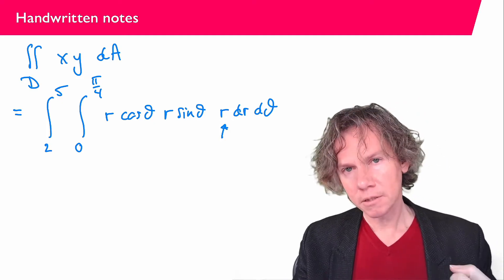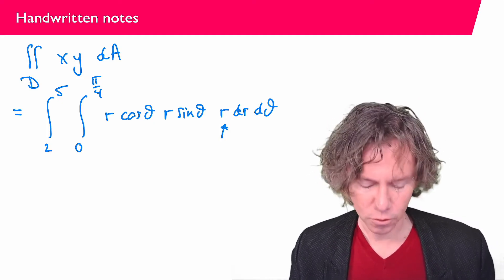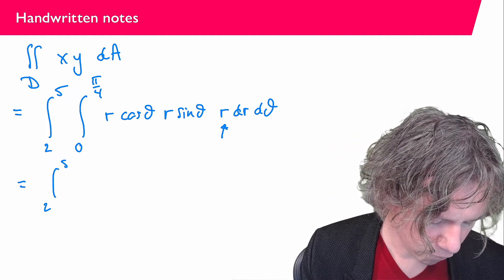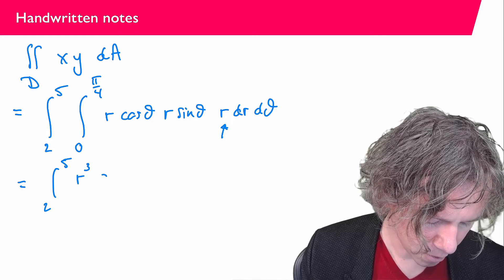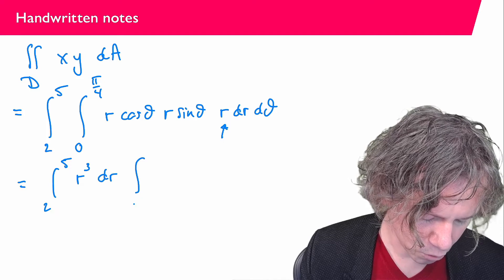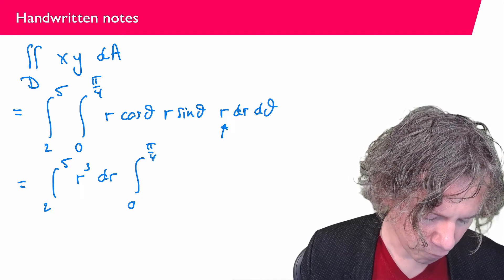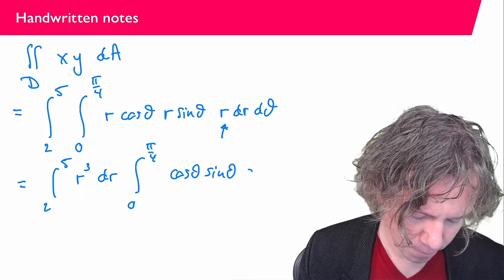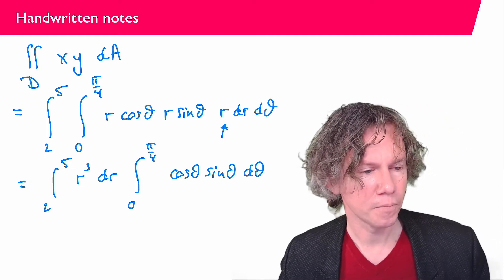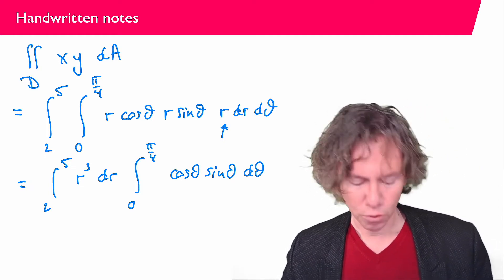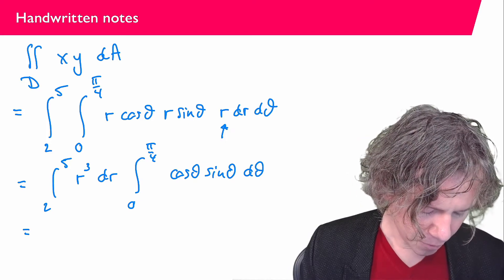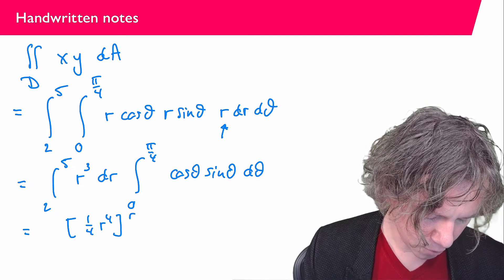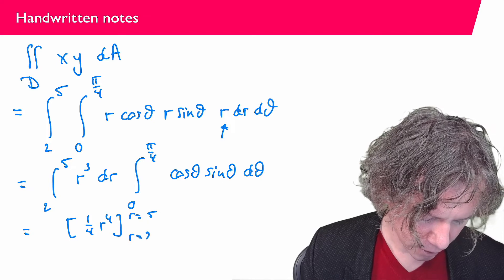So if I now split it into the integral related to r and to theta, you see that I can write this as the integral from 2 to 5, r to the power of 3 dr. And the second integral runs from 0 to pi over 4. And we have cosine theta, sine theta, dθ. Now of course the first integral is easy to find. So I can immediately give an antiderivative here. 1 over 4, r to the power of 4, and r is in between 5 and 2.